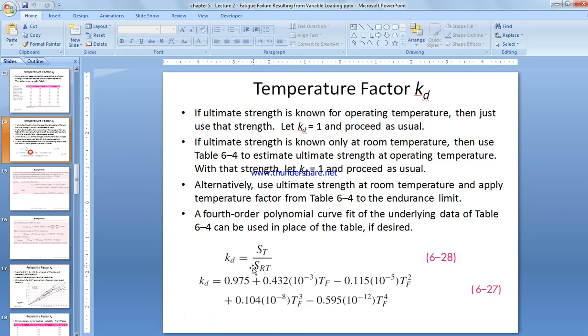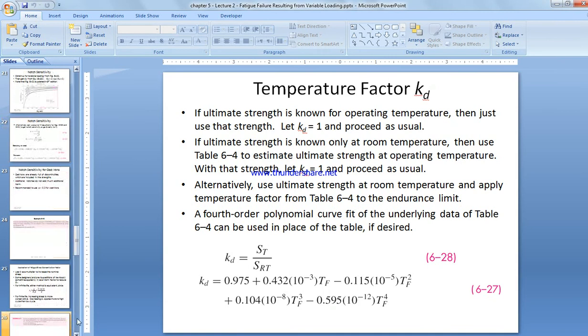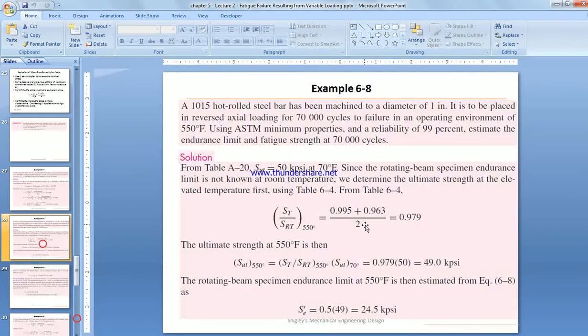Temperature divided by the room temperature, which is to get this formula for the value of KD. So once we do this, we go back to slide 28. If we do the interpolation, we get 0.979. When we multiply this by 50, we get 49 ksi for SUT at the given temperature of 550 degrees Fahrenheit.